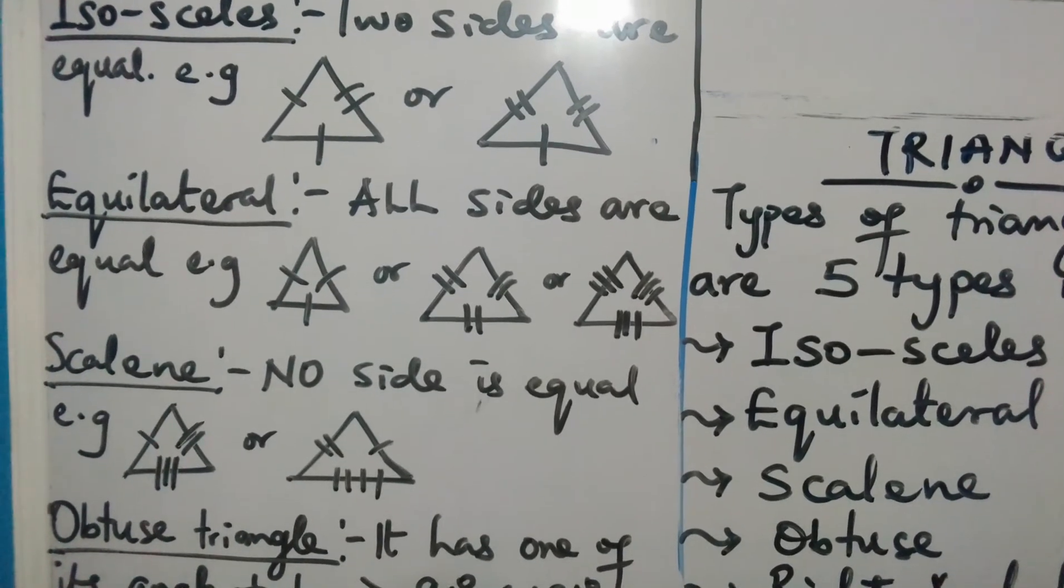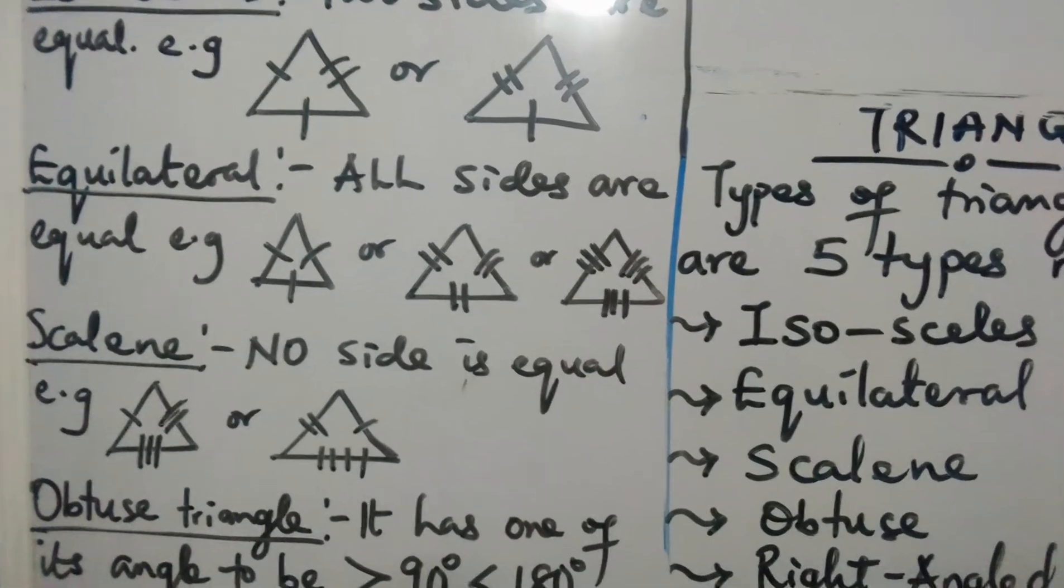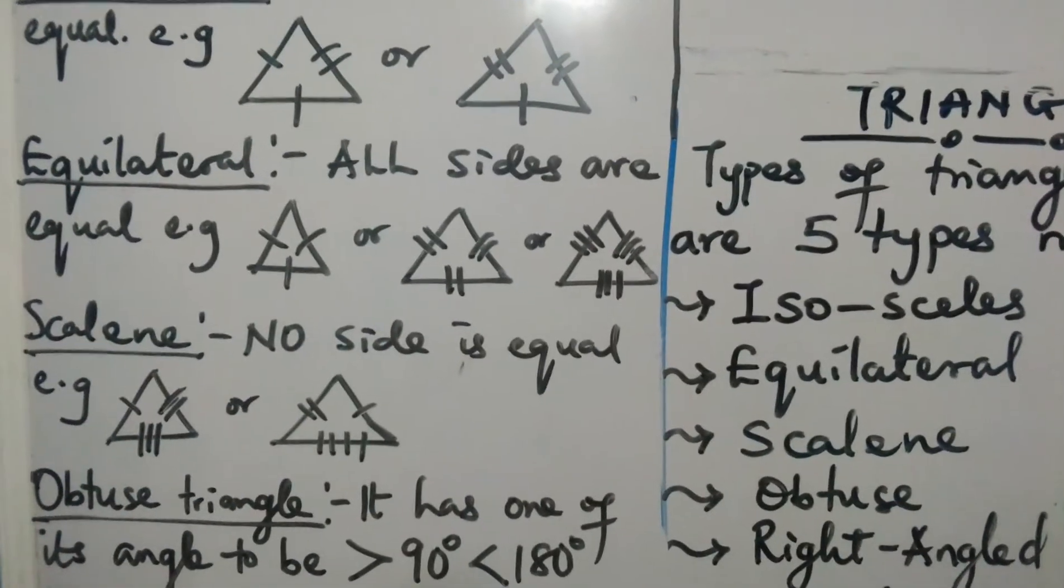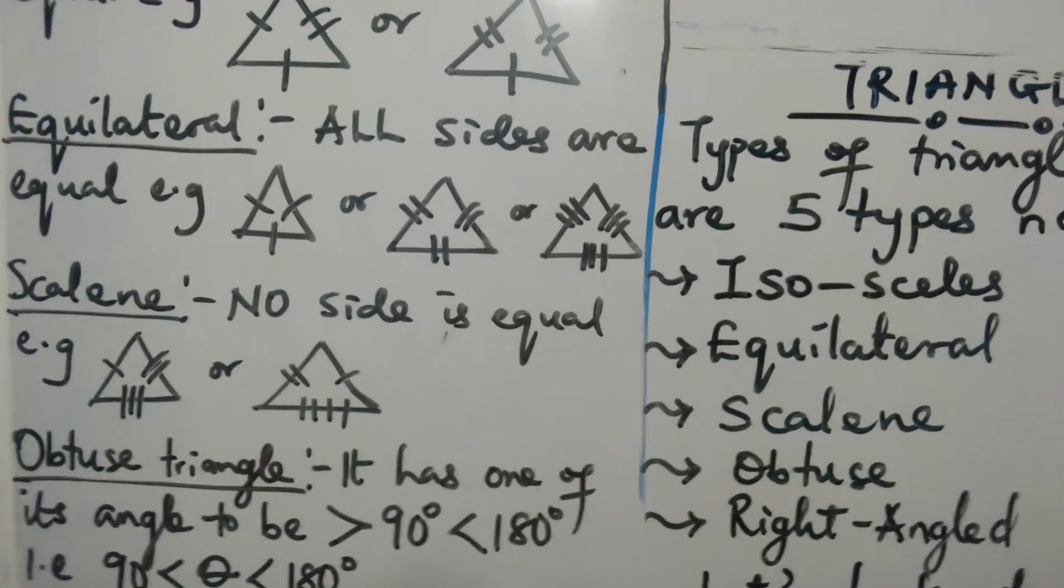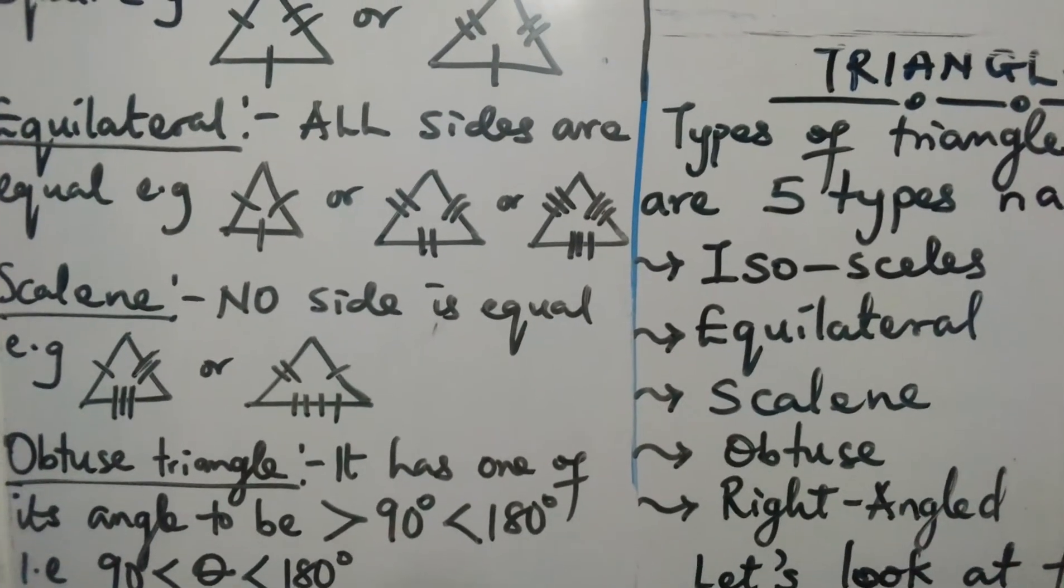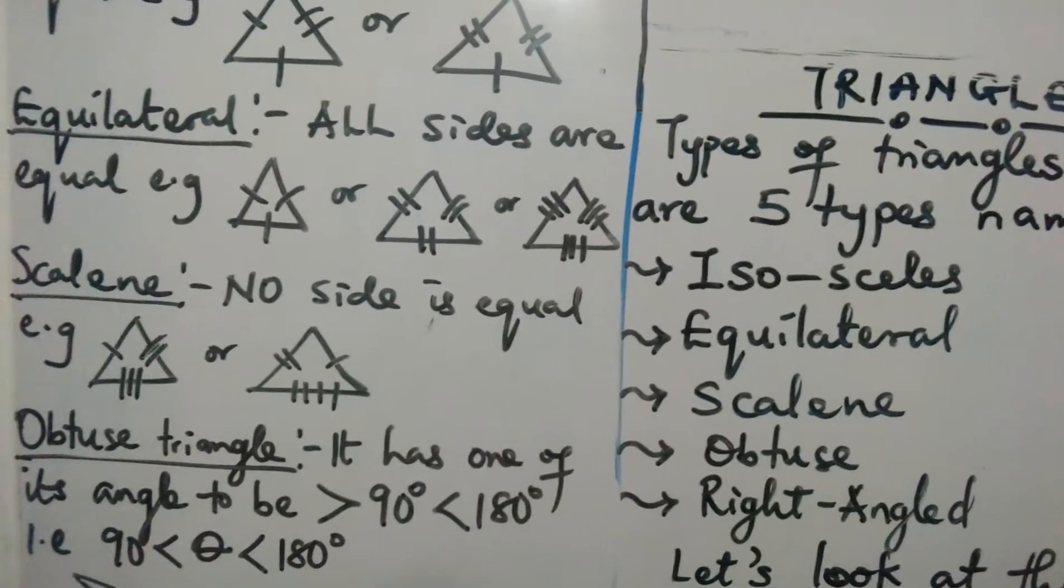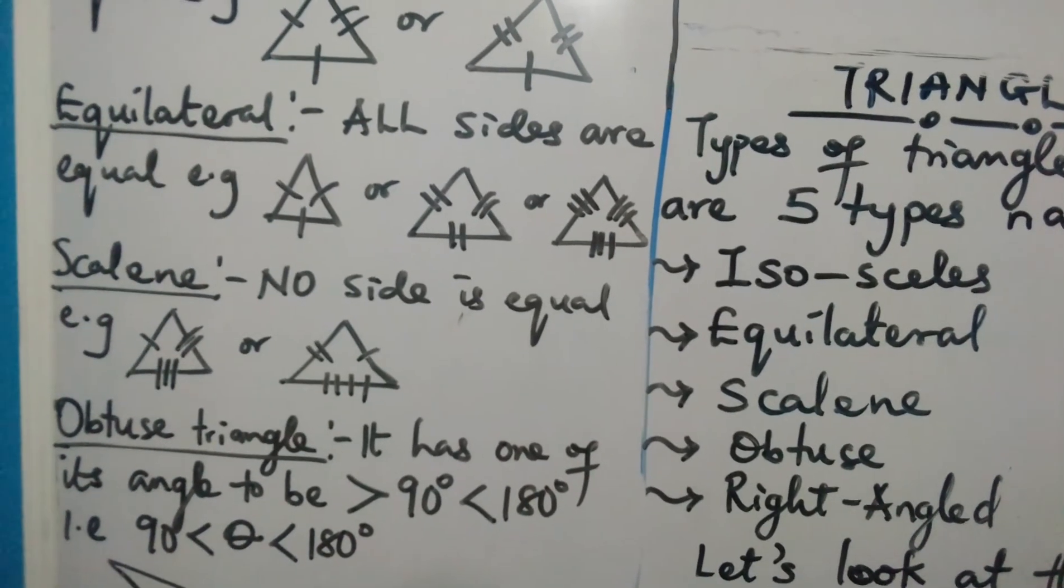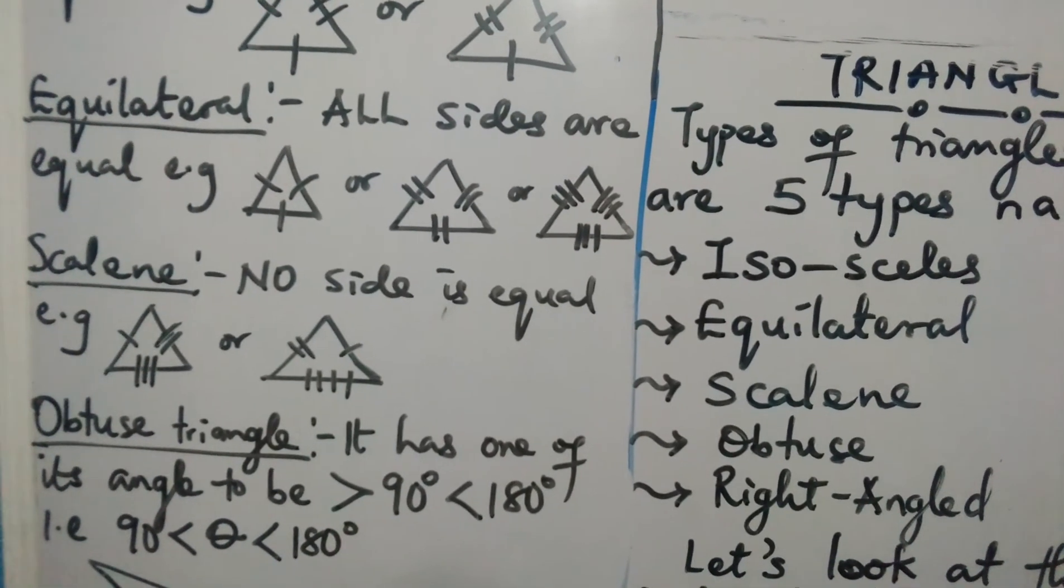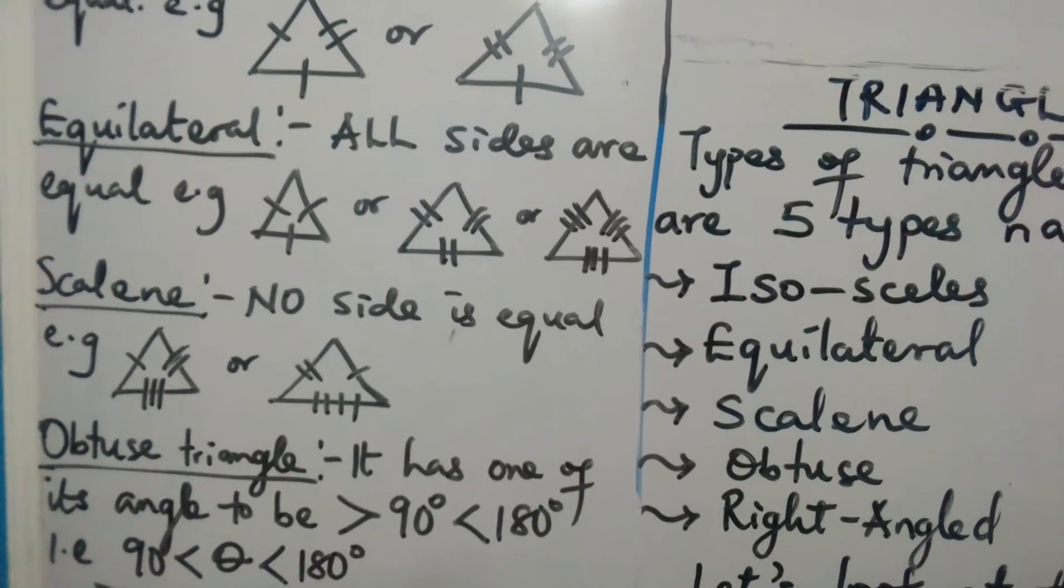Then we'll go straight to obtuse triangle. An obtuse angle is an angle that is greater than 90 degrees but less than 180 degrees. This is a triangle that has one of its interior angles to be greater than 90 degrees.